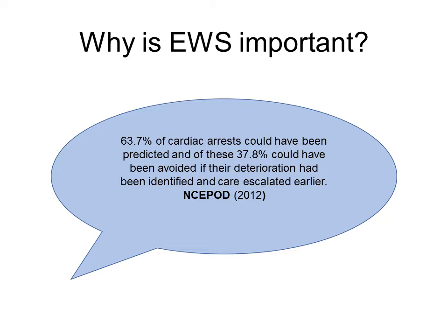Early warning scores are not a new concept — they've been around for many years. However, inpatient deterioration is still going undetected. In 2012, NC-POD looked at patient observations leading up to inpatient cardiac arrests and found that over 60% of inpatient cardiac arrests could have been predicted, and from this, over one third of those cardiac arrests could have been avoided had their deterioration been identified earlier and the appropriate treatment commenced.